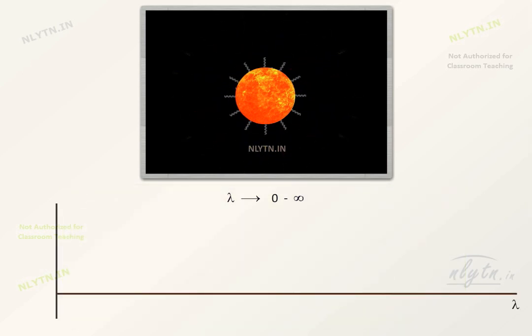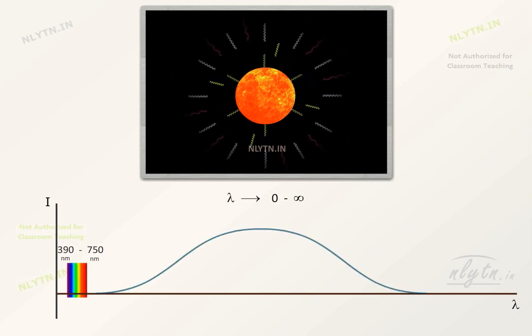But if that is the case, then some radiations must be in the visible range as well. So why don't we see the thermal radiations? This is because the intensity or the energy of emission is not equal for the waves of all wavelengths.